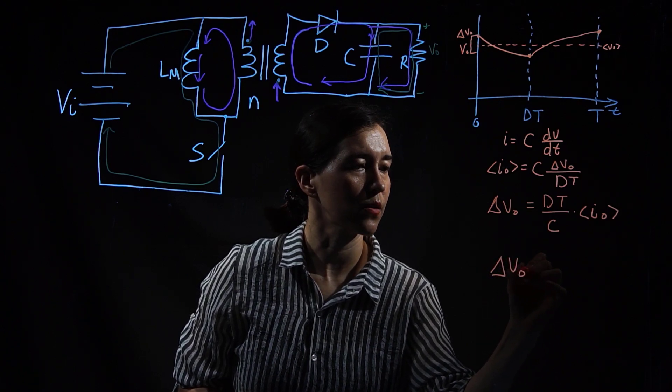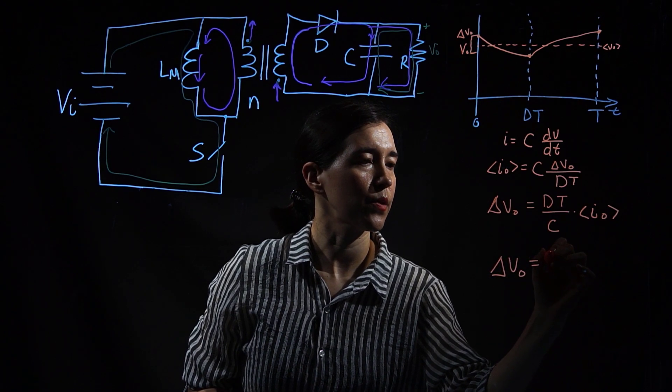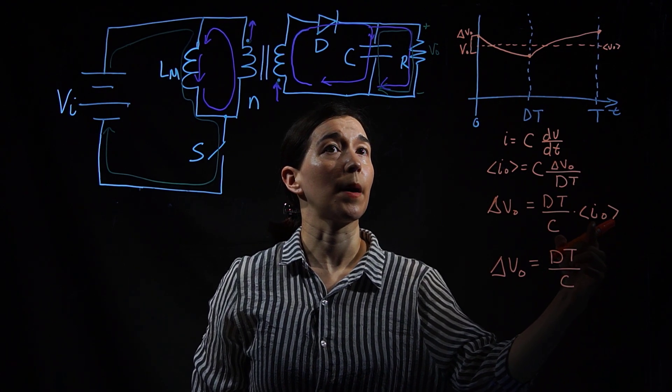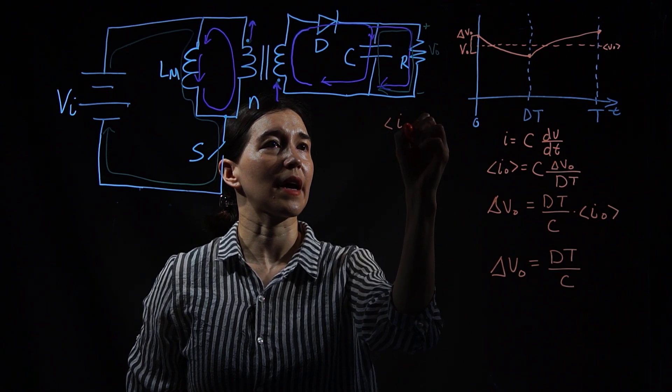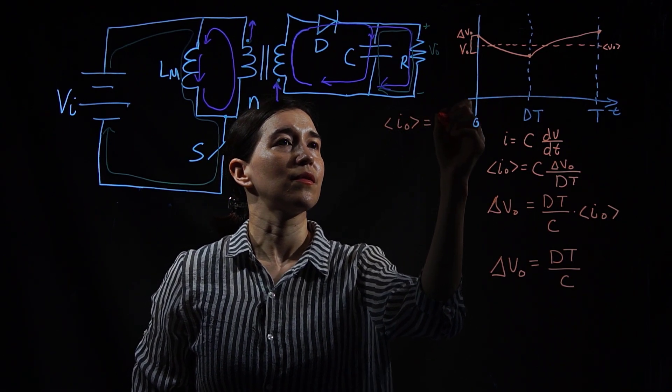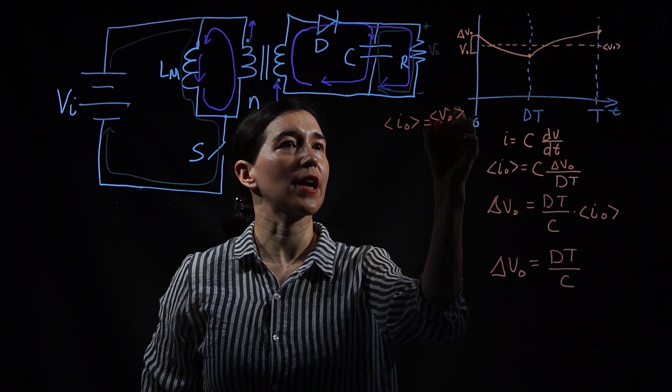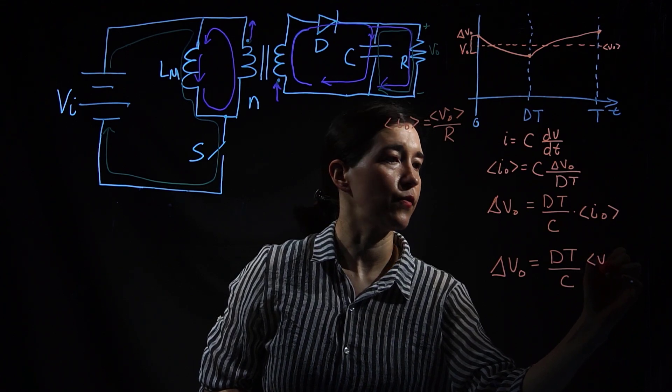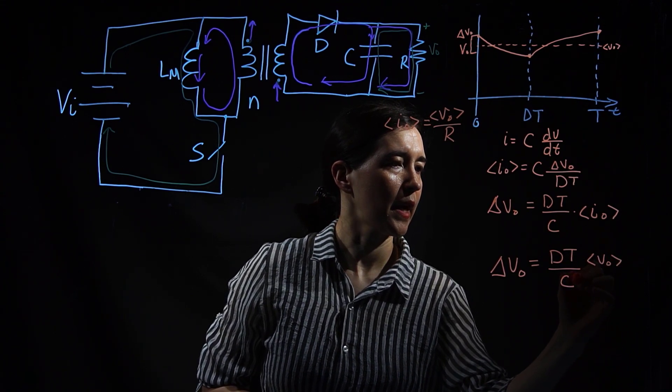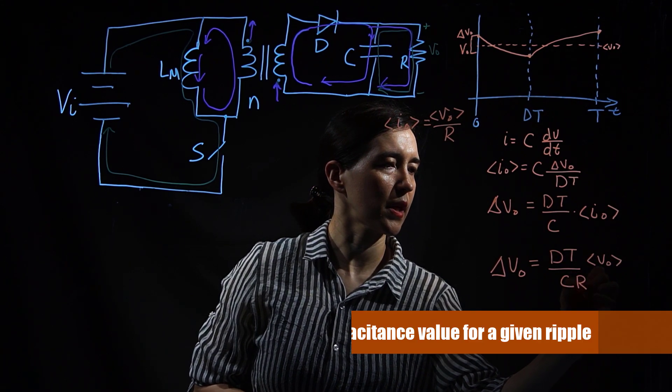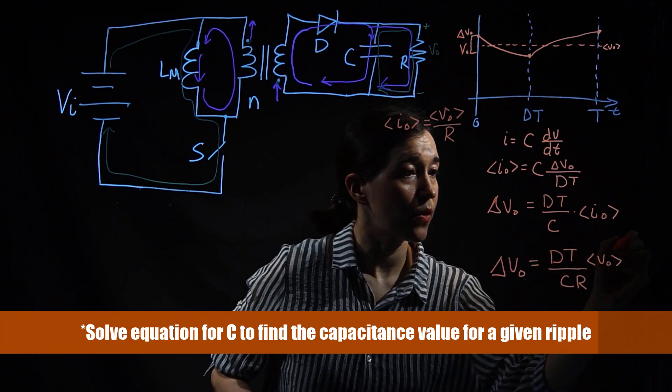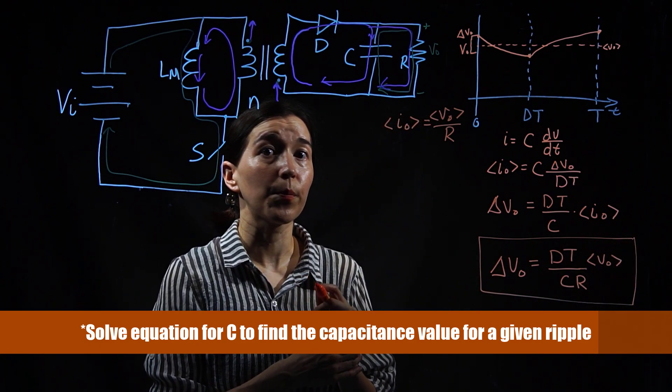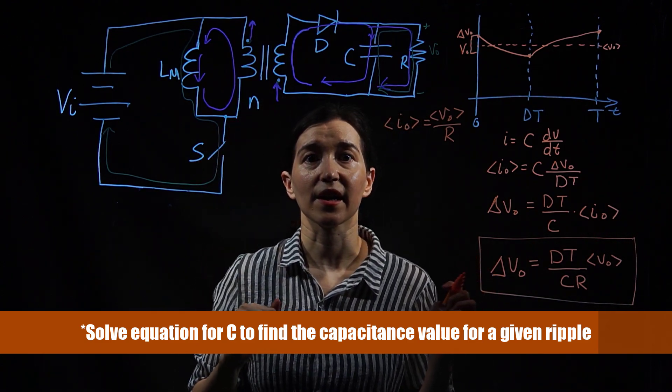So delta V out, the ripple, equals dt T over C, and then this is going to become the average output over your resistor. This becomes average VO, and our R is going to go down here. So this is our output voltage ripple for a flyback converter.